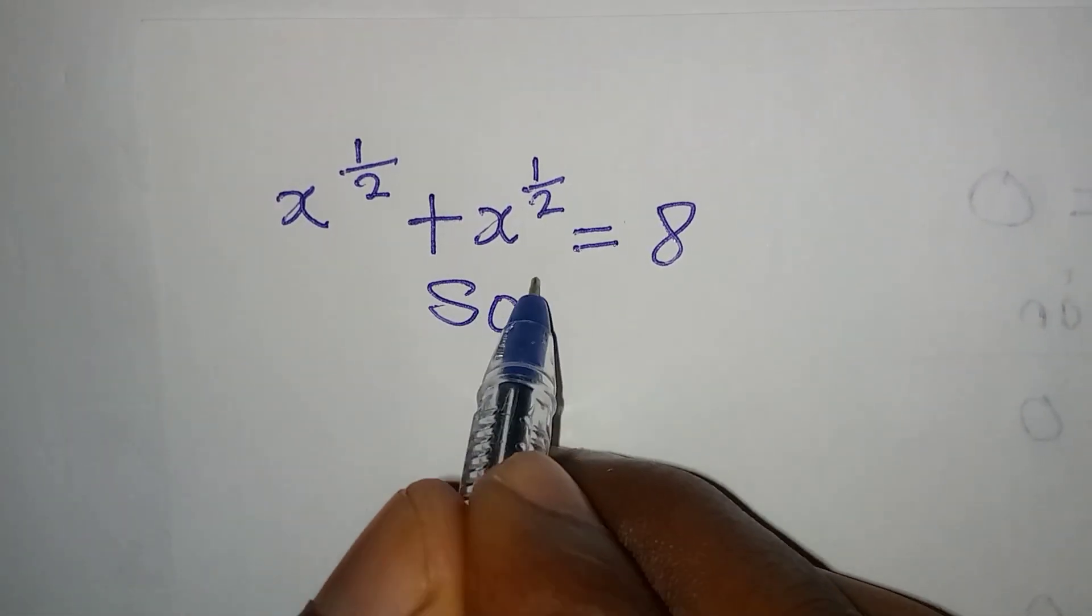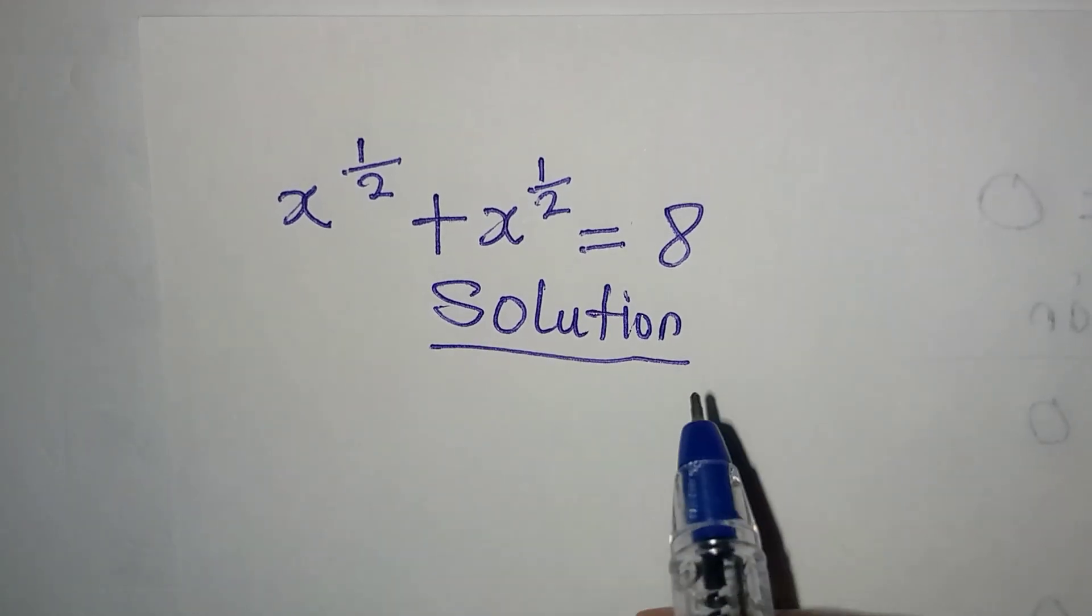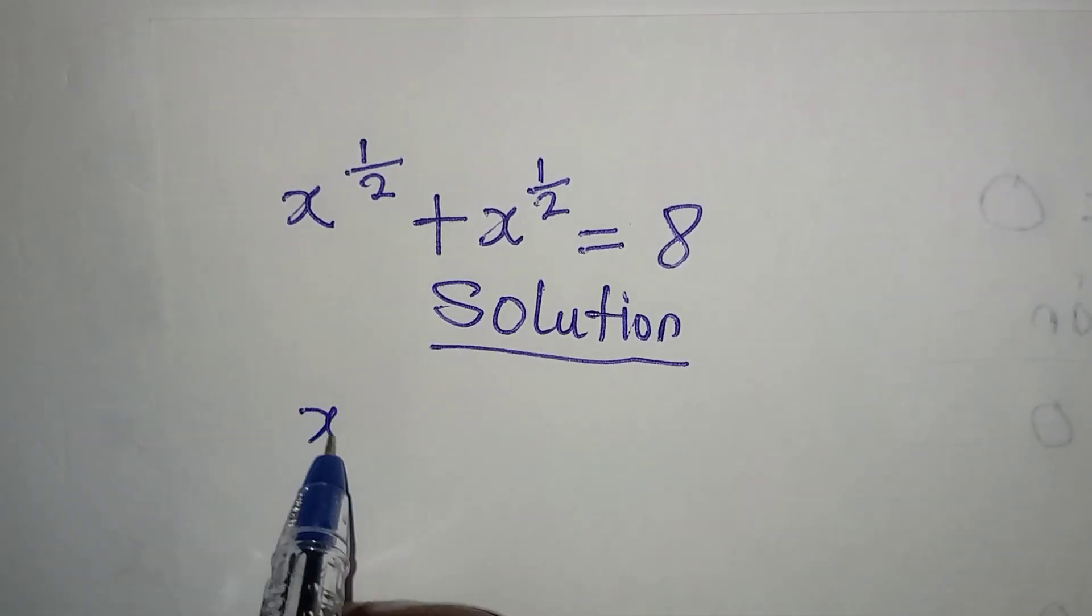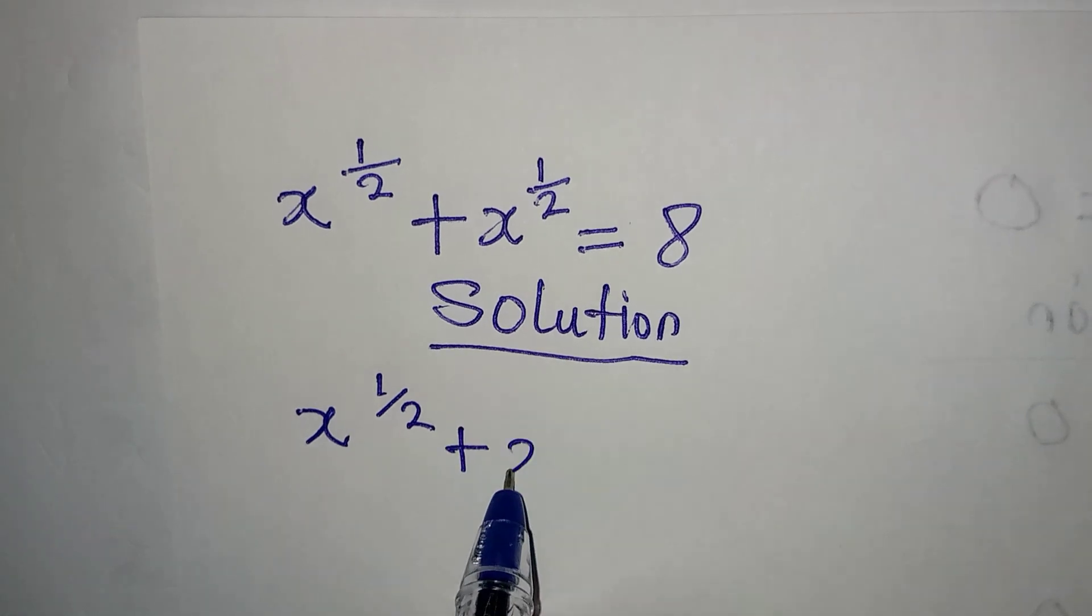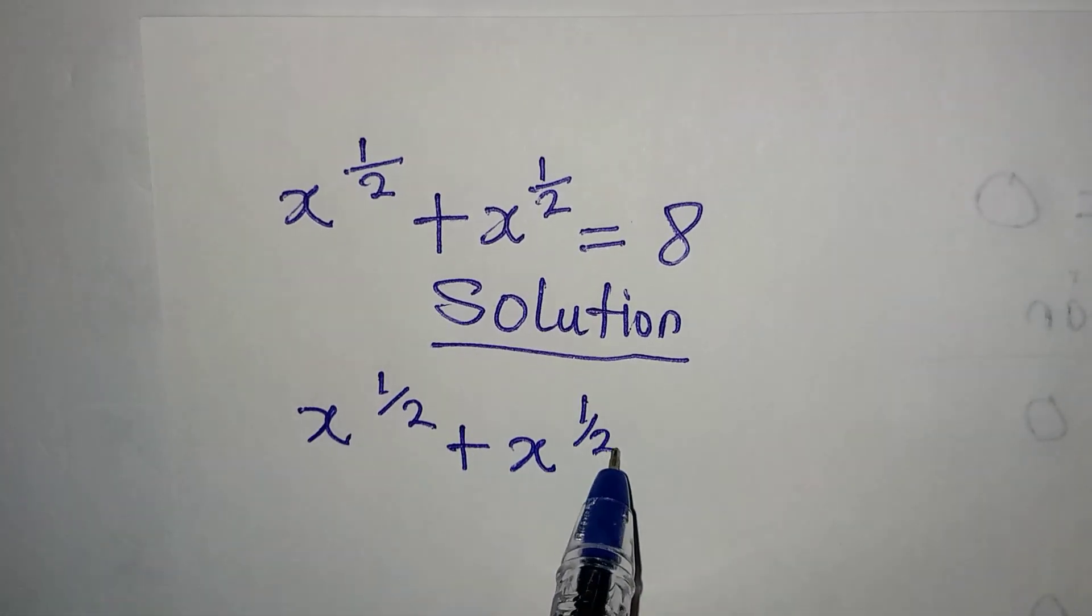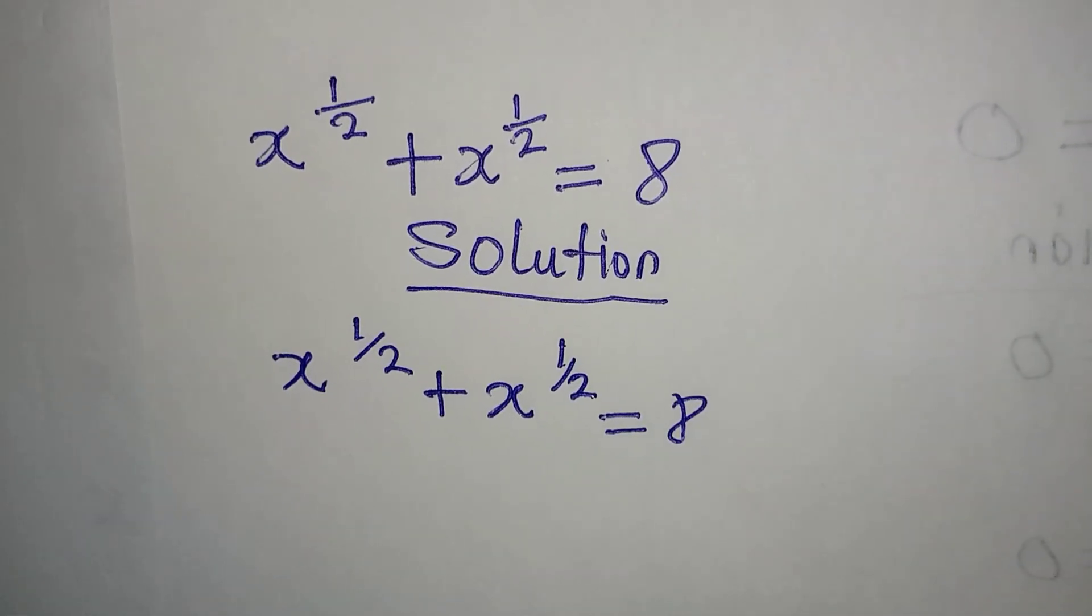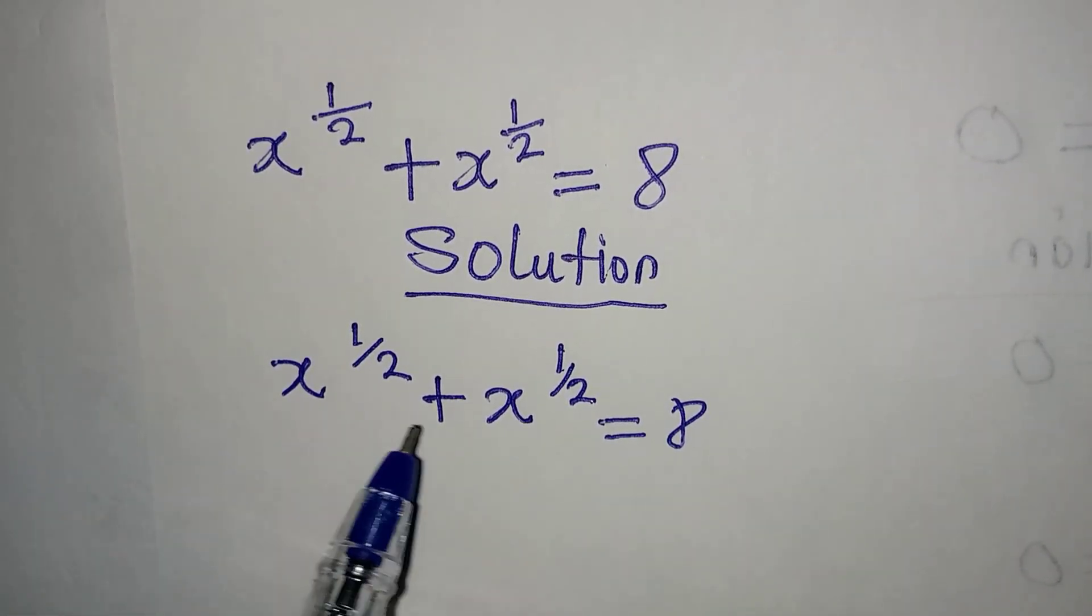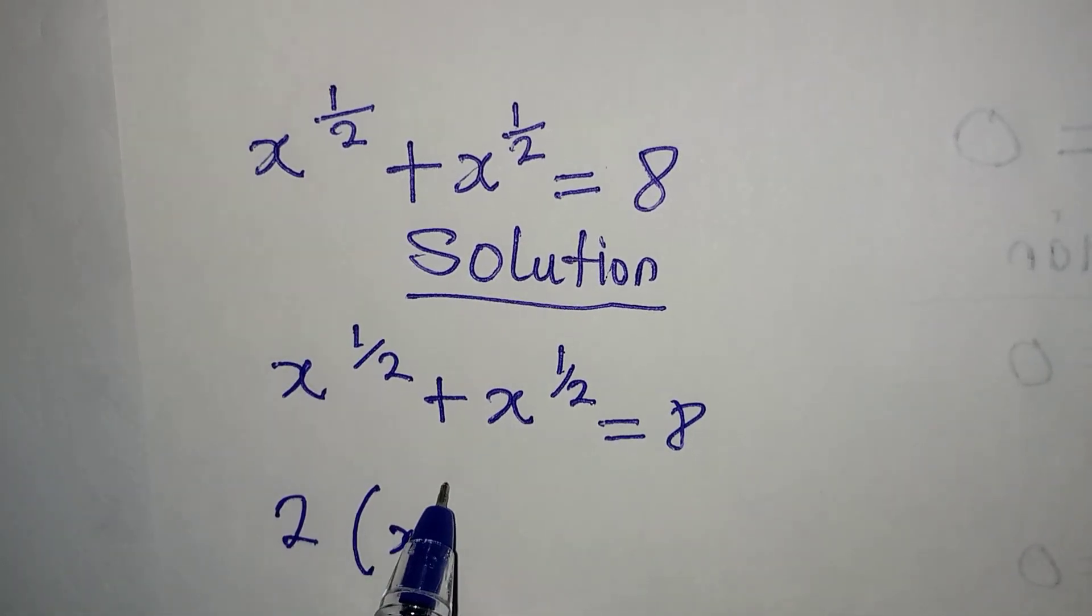Hello everyone, let's deal with this problem right away. We have x to the power of 1 over 2 plus x to the power of 1 over 2 equals 8. We have x to the power of 1 over 2 in two places.